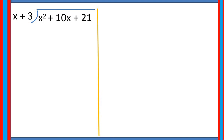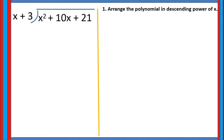Here are the steps. First, arrange the polynomial in descending power of x. In our example, both the dividend and the divisor are already arranged in descending power of x.